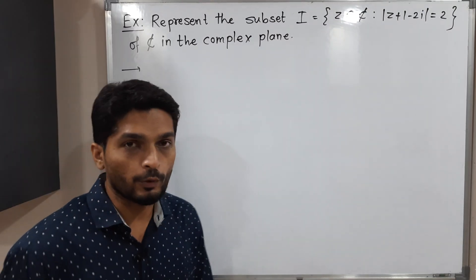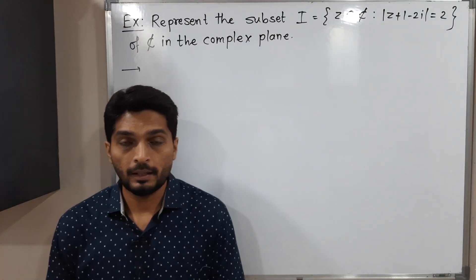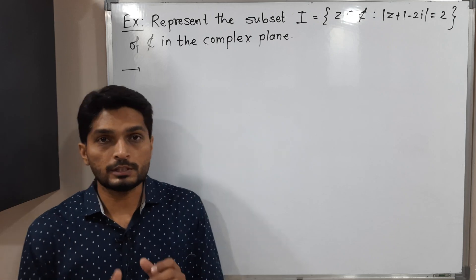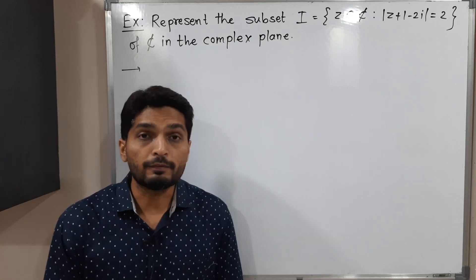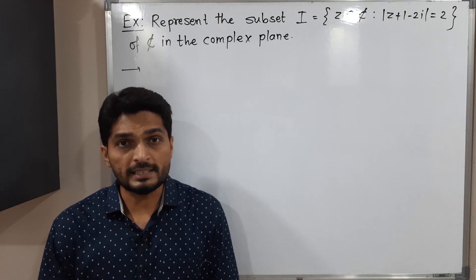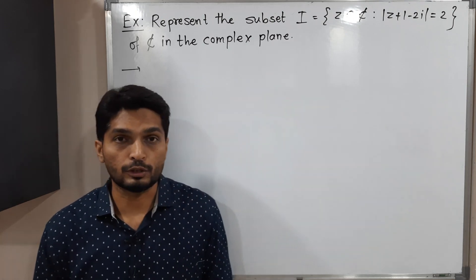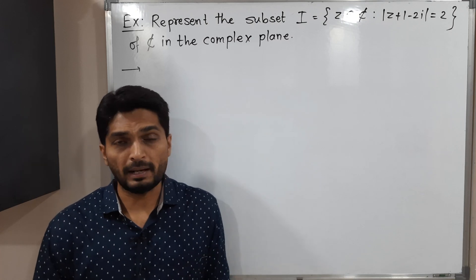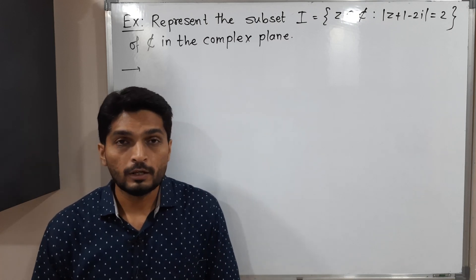Hi everyone, in this video we are going to discuss this example. We have a set I which is a subset of complex numbers, and we have to represent it in a complex plane. So I is a collection of all complex numbers which satisfy that condition: mod(z + 1 - 2i) = 2.